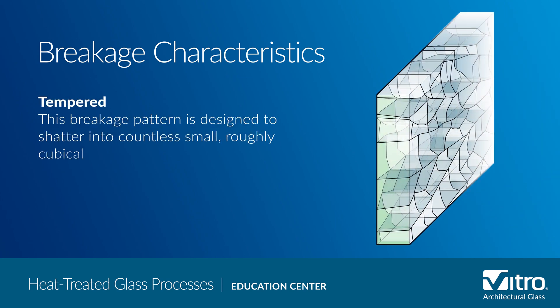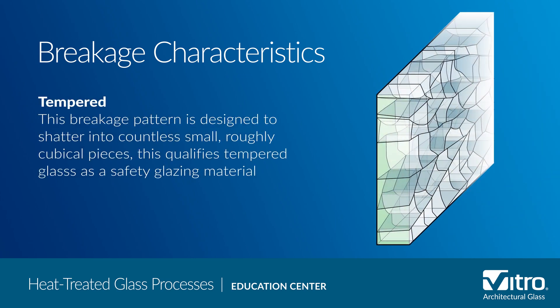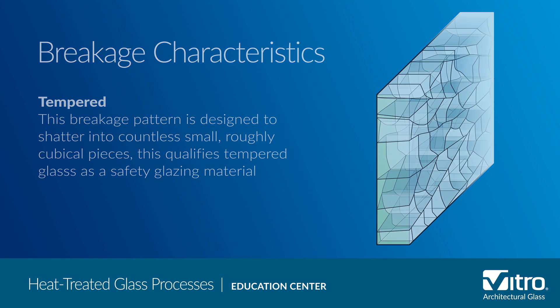On the other hand, tempered glass is designed to shatter into countless small, roughly cube-like pieces. It is this break pattern that qualifies tempered glass as a safety glazing material. However, because of this break pattern, tempered glass is much more likely to fall from the glazing system when it breaks. Therefore, it is essential for design professionals to consider this when selecting a safety glass. If it is important for the glass to stay anchored in the glazing system, you should consider another form of safety glass, such as laminated glass.